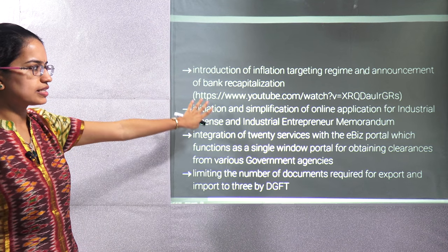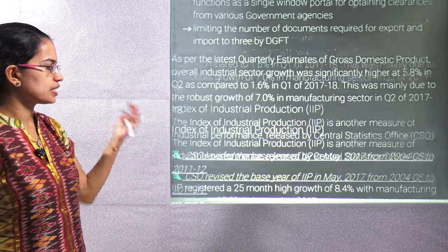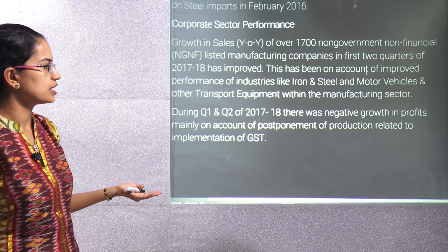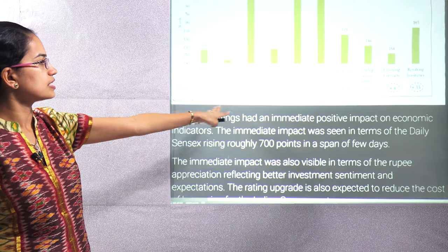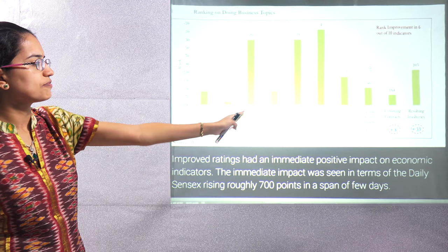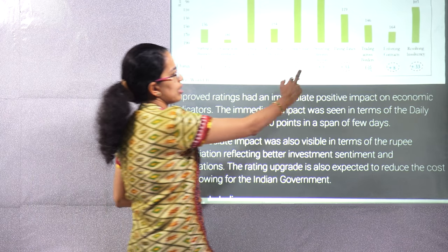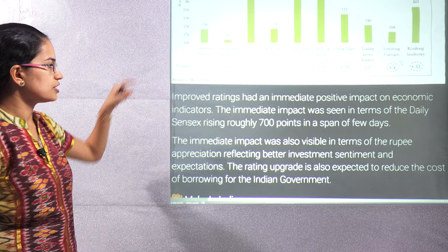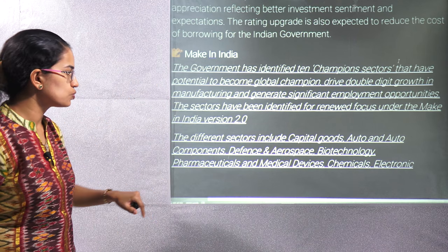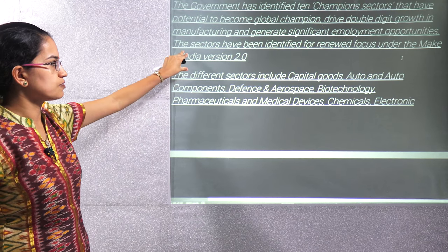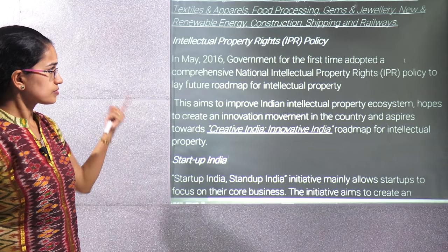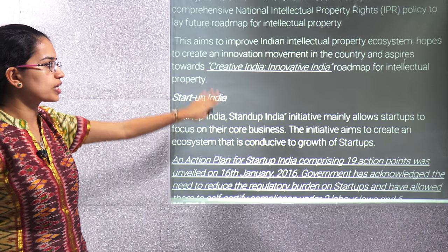In the industry sector, we are talking about the Insolvency and Bankruptcy Code, implementation of GST, and recapitalization of banks — all covered in separate lectures. The CSO has revised the Index of Industrial Production. The ease of doing business rankings show in which sections India has improved and where it has declined. Under Make in India we are working on version 2.0, with renewed focus on specific sectors for development.